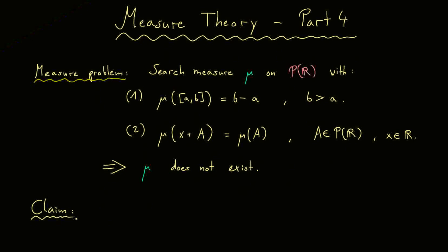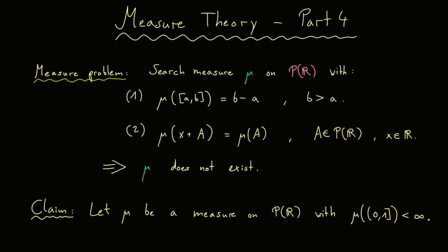The claim I will prove is the following. Let mu be a measure on the power set with properties 1 and 2 — but I will weaken property 1 a little bit. I just want that the measure of the unit interval is finite, so not infinity. This is fulfilled when property 1 holds. In addition, mu should fulfill property 2, which means it is translation invariant. The result is that there is only one measure satisfying this, and this is the zero measure. The trivial measure does not fulfill property 1, so this explains this implication.